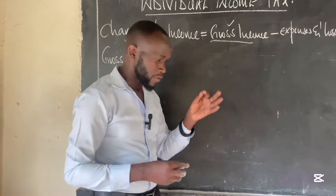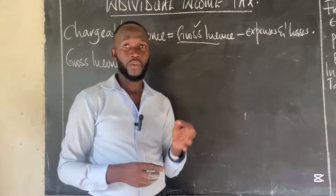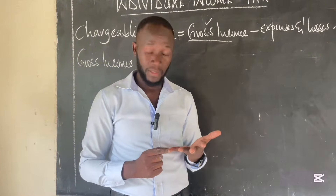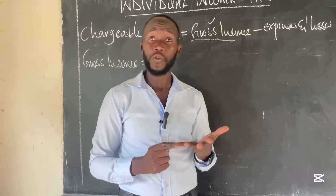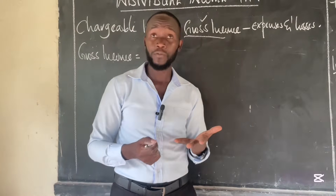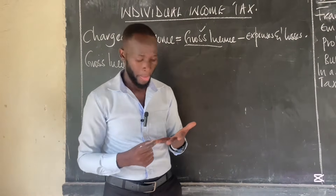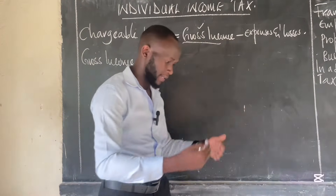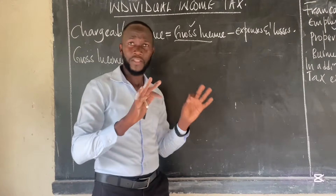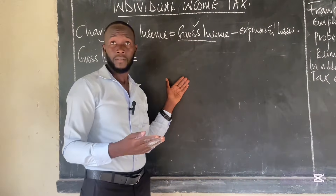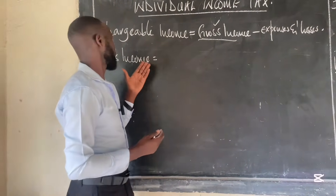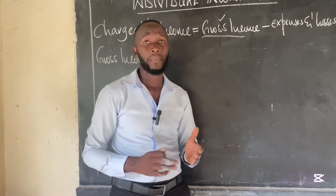Gross income is gotten from three major sources. One, you may be operating a business, and the amount you receive is called business income. Two, you may have property, and the money you earn from that property is called property income. Three, you may be employed somewhere, and what you earn as salary or wage is called employment income. According to the Income Tax Act, gross income must be earned from those three major sources.